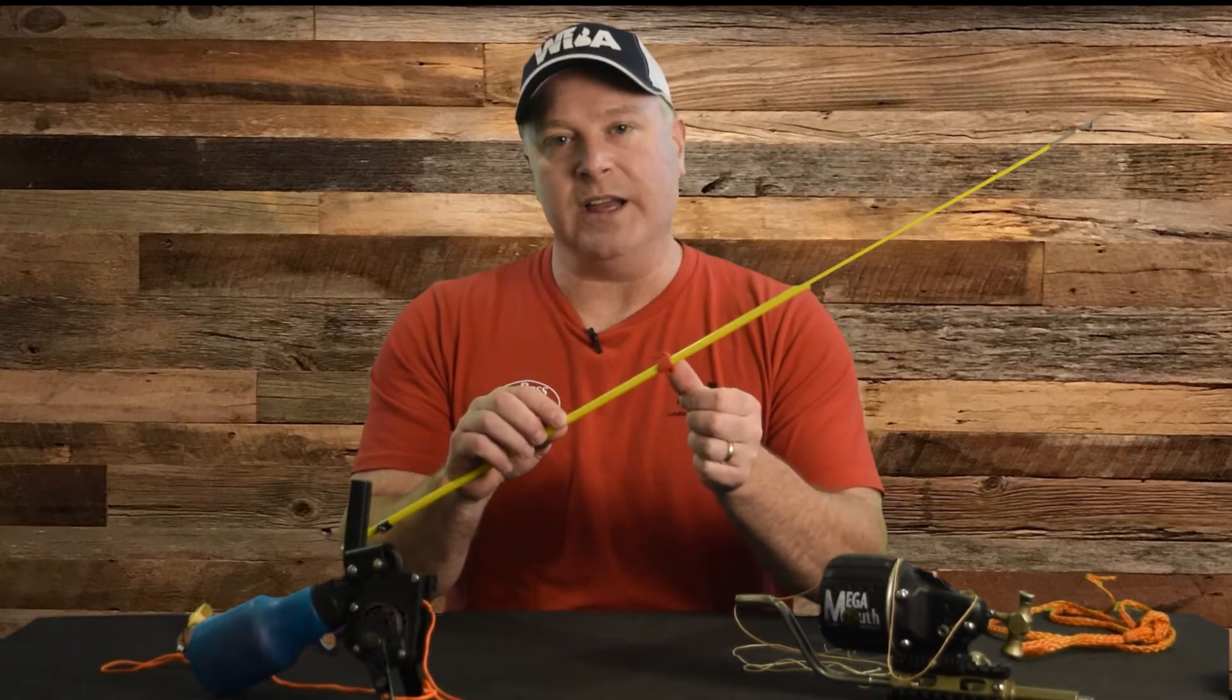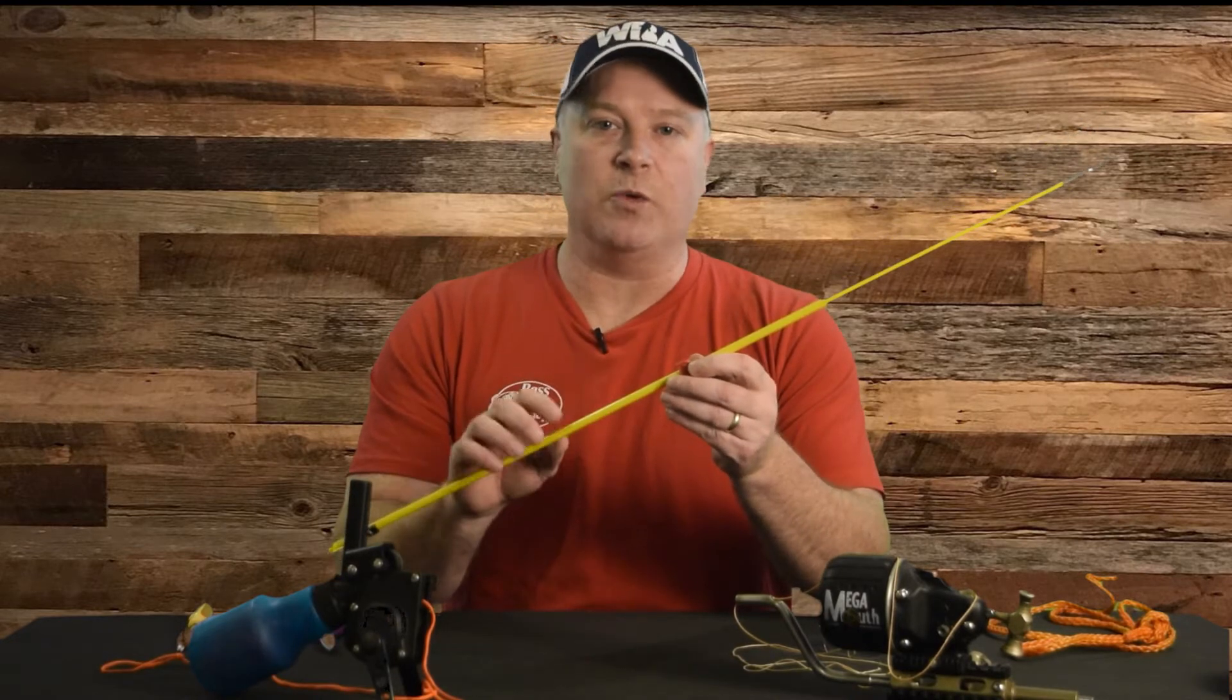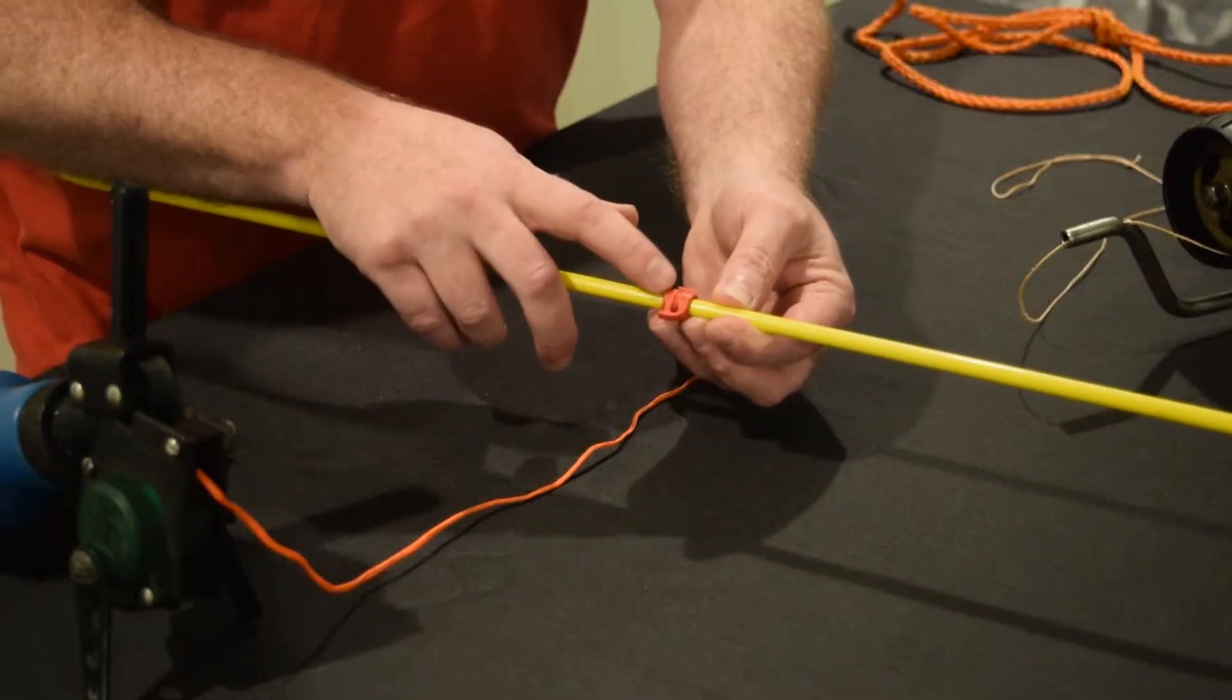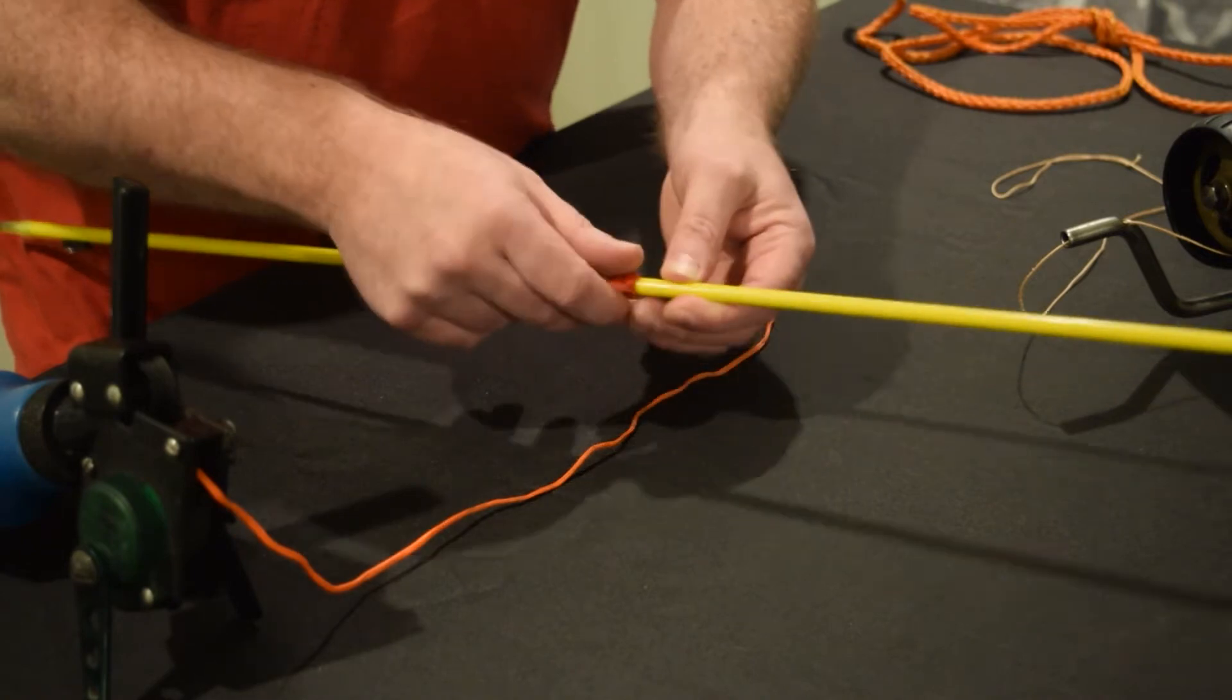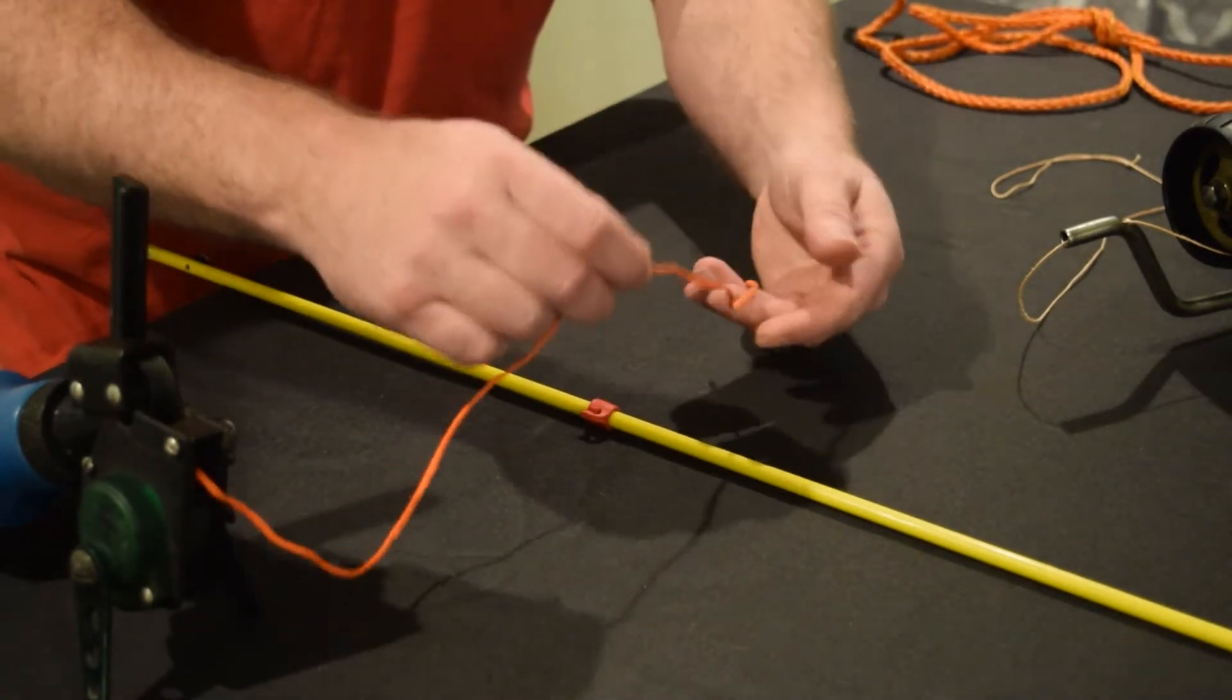So this is a safety slide, and there are a few variations on the market, but for this demonstration, we'll focus on the slide design made popular by AMS Bowfishing. You can see that one side has a groove on it, and the other side doesn't.